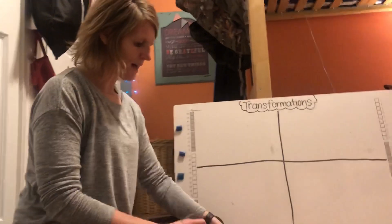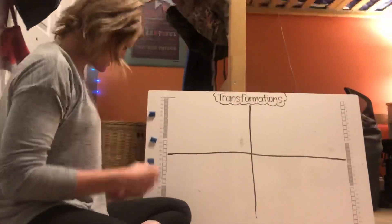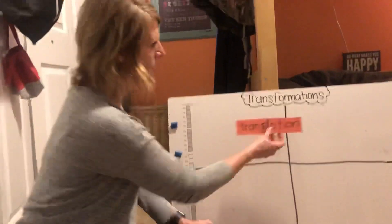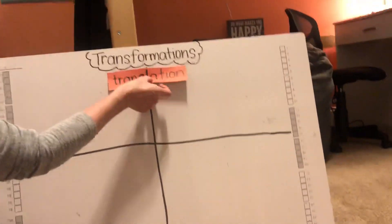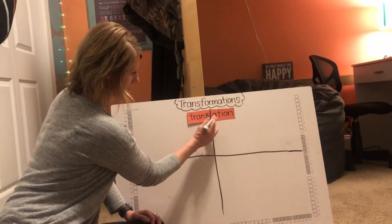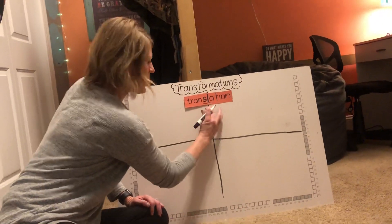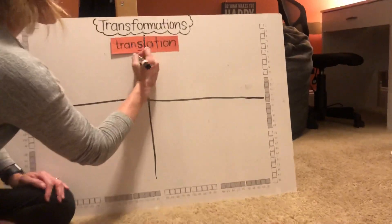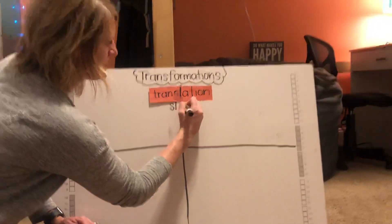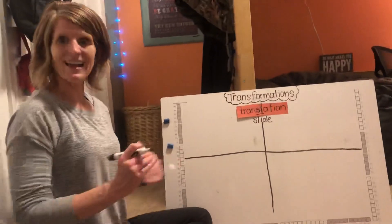So sometimes we're going to use a couple of different words. The first word we're going to talk about is called a translation. I always remember translation because I see the letters S-L right here, and that reminds me of the word SLIDE, which just means to slide something.